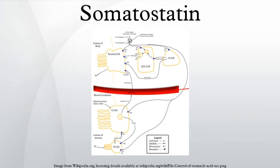Somatostatin, or somatotropin release inhibiting factor, or somatotropin release inhibiting hormone, is a peptide hormone that regulates the endocrine system and affects neurotransmission and cell proliferation via interaction with G-protein coupled somatostatin receptors and inhibition of the release of numerous secondary hormones.